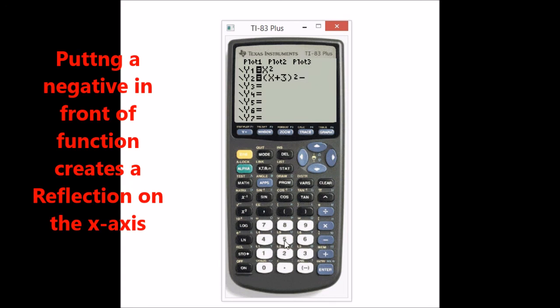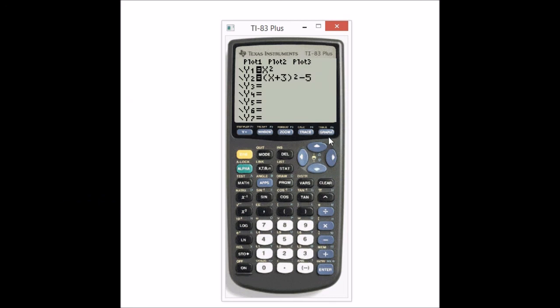Now let's combine all this stuff together. Notice the function that I put in there. I put x plus 3 squared minus 5. So this should be a parabola that goes in the negative direction, 3 units, and then shifts down 5 units. And that's exactly what happens. It goes 3 in the negative direction and then 5 down.